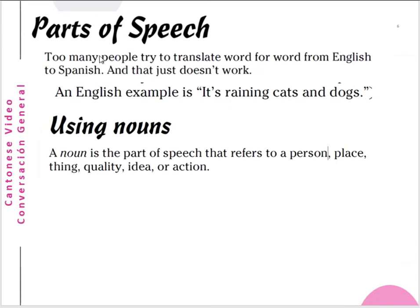Now we are talking about the parts of speech. Some people try to translate word for word from English to Spanish, and you know this just doesn't work. For example, 'it is raining cats and dogs' only means it is raining heavily — you can't translate it into Spanish word by word. You have to understand the parts of speech.